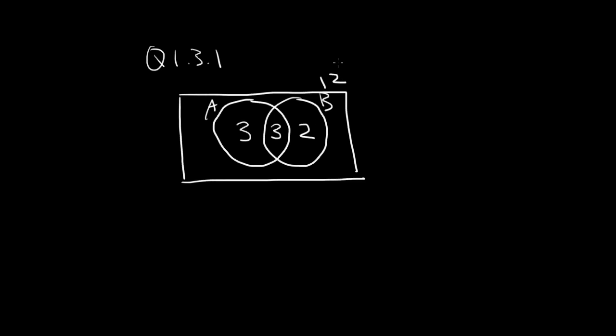Since we know that there are 12 in the universe, and there are 8 of them here inside the circles, that must leave 4 outside the circles.